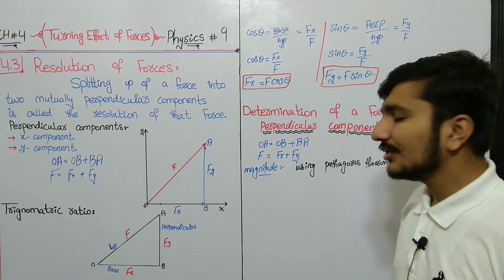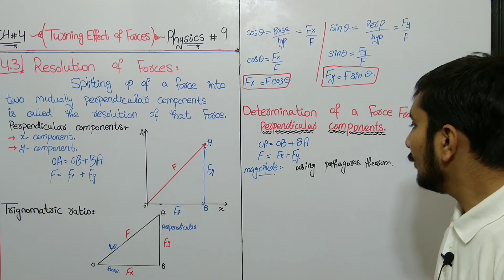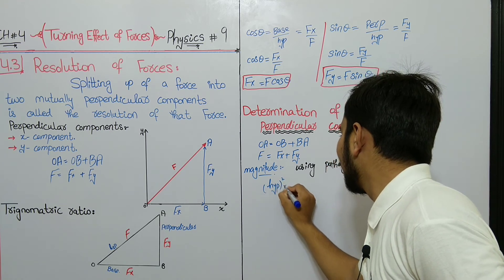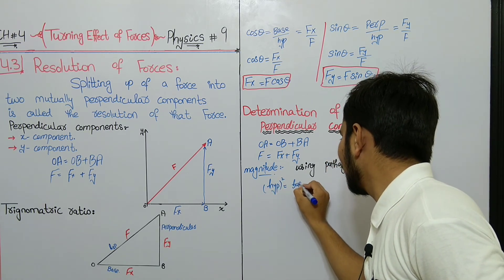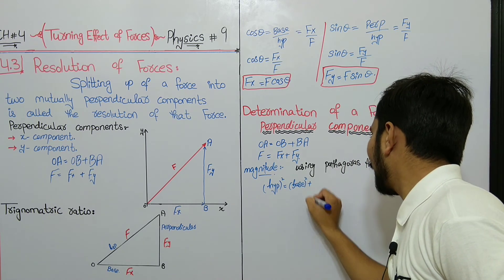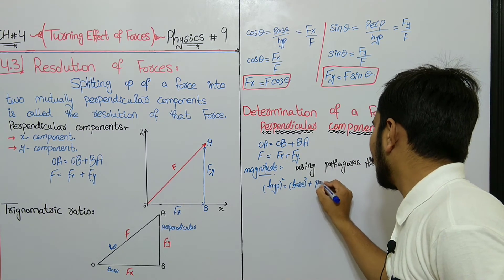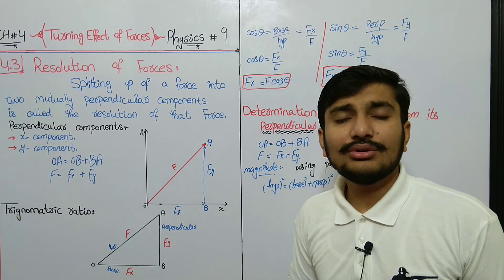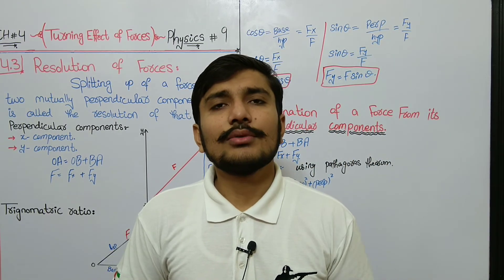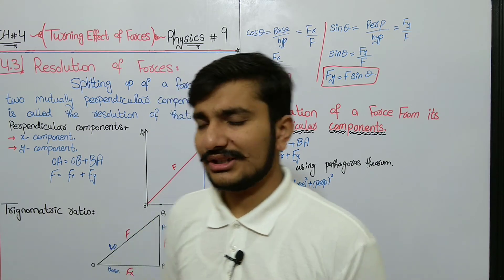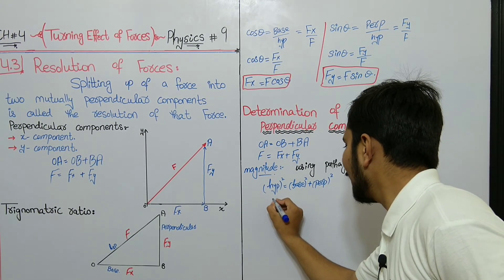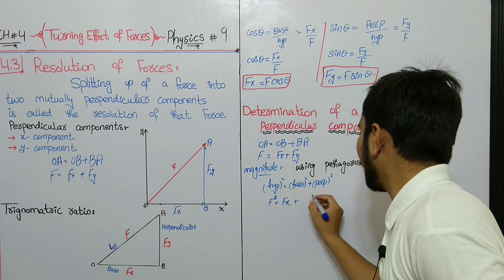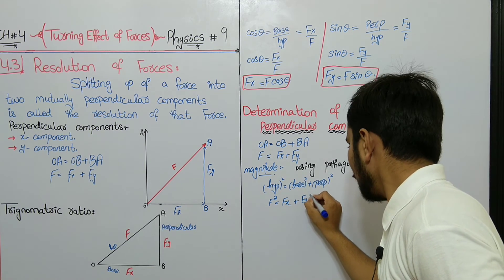We use the Pythagorean theorem. The Pythagorean theorem states that hypotenuse squared is equal to base squared plus perpendicular squared. So here we put in values: F squared is equal to Fx squared plus Fy squared.